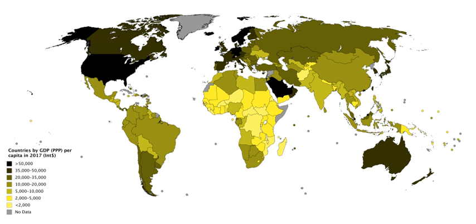These activities are increasingly important in developed economies, and the international conventions governing their estimation and their inclusion or exclusion in GDP regularly change in an attempt to keep up with industrial advances. In the words of one academic economist, the actual number for GDP is therefore the product of a vast patchwork of statistics and a complicated set of processes carried out on the raw data to fit them to the conceptual framework.